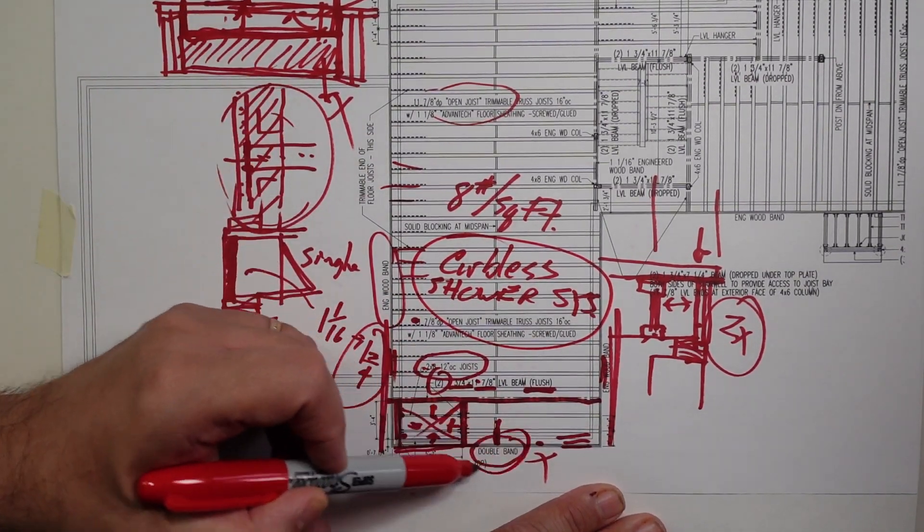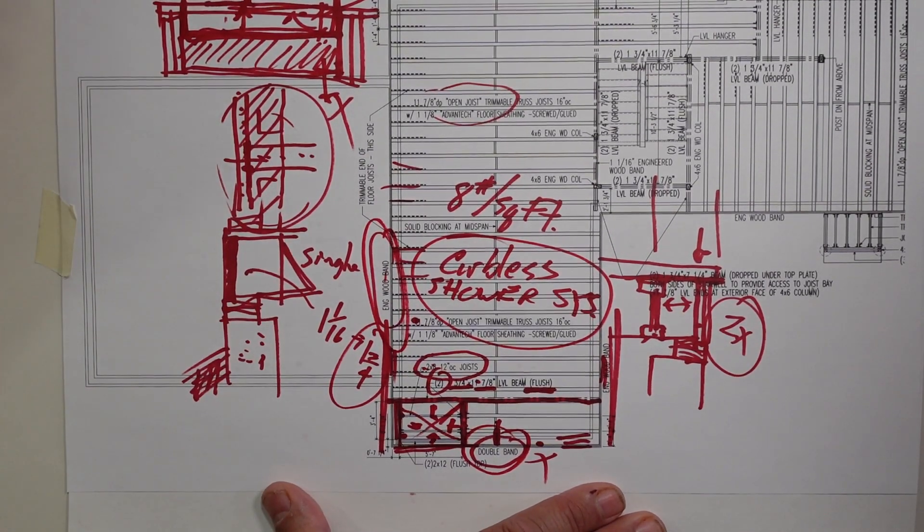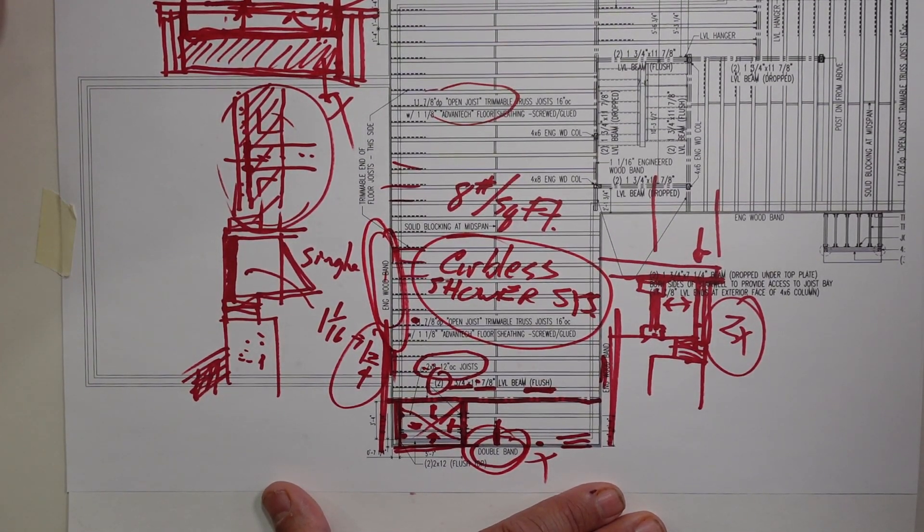And yeah, don't forget double bands on the parallel, single bands on the perpendicular, and you'll have a nice strong system there. So well, there you have it, folks. Big red says we're done. So we're done. When he quits, I quit.